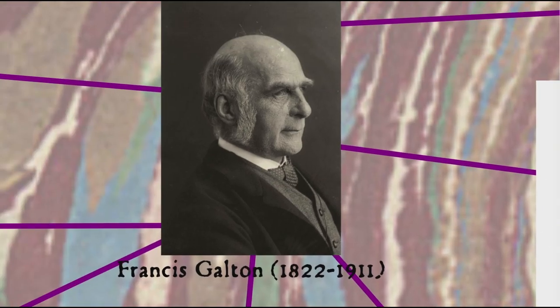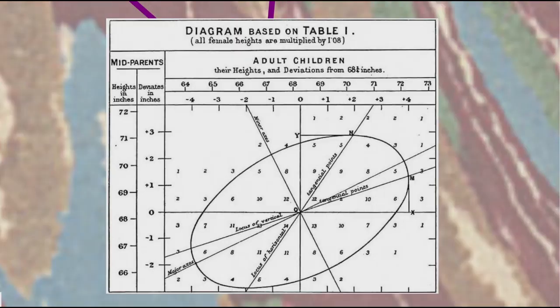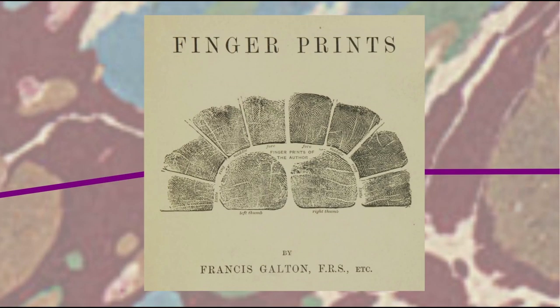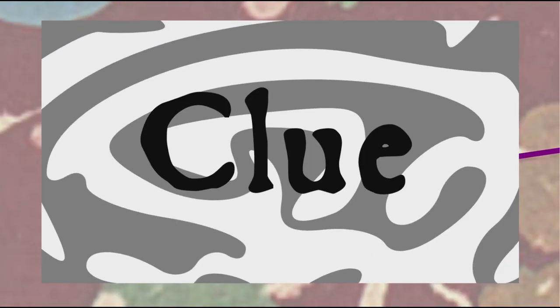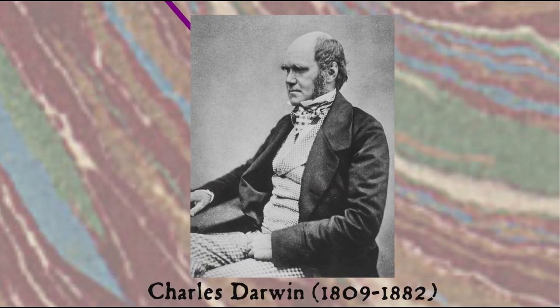Another early researcher into synesthesia was Francis Galton, who studied synesthetes who involuntarily picture numbers in physical space, and was also interested in Fechner's work on psychophysics, as he was into quantification and statistical analysis. Galton, who was also known for developing the science of fingerprinting, was obsessed with measuring people, largely as a result of his belief in eugenics, taking his cousin Charles Darwin's ideas to some dark places.